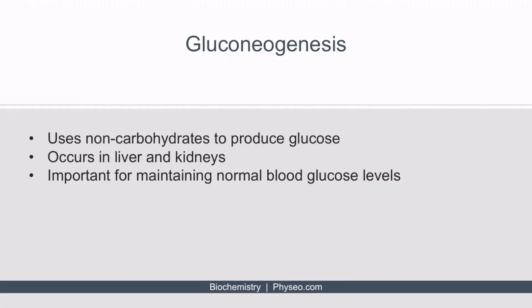So what is gluconeogenesis? It's a key metabolic pathway that uses non-carbohydrates to produce glucose. Non-carbohydrates include lactate, amino acids, glycerol, and propionyl-CoA, which is a product of odd-chain fatty acids.